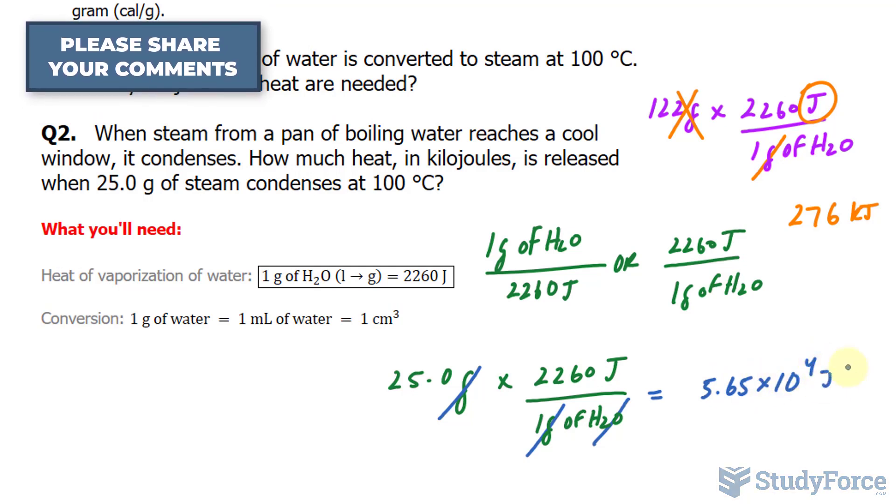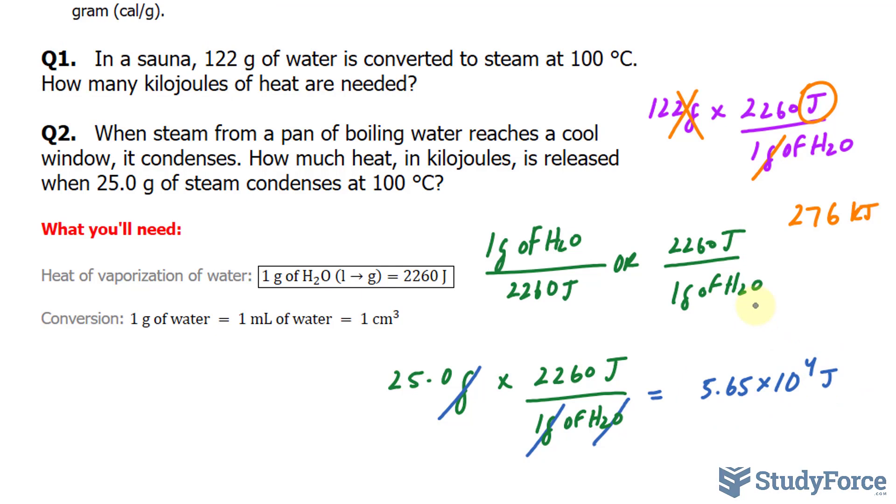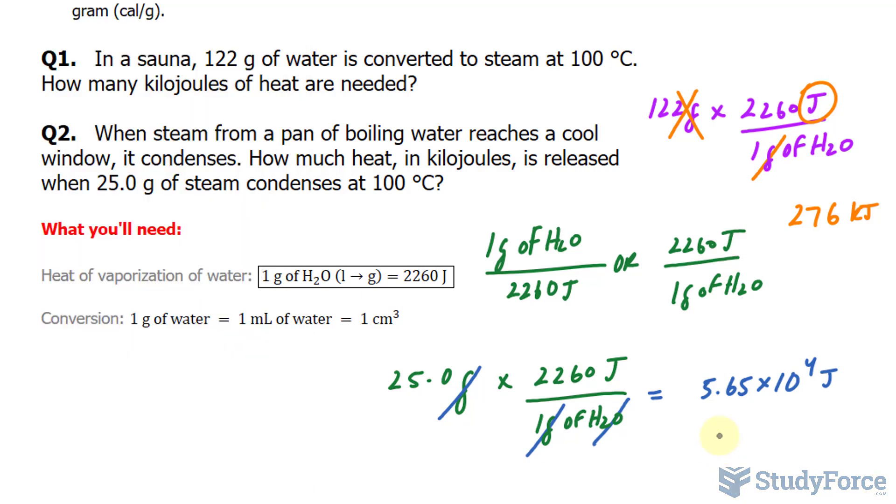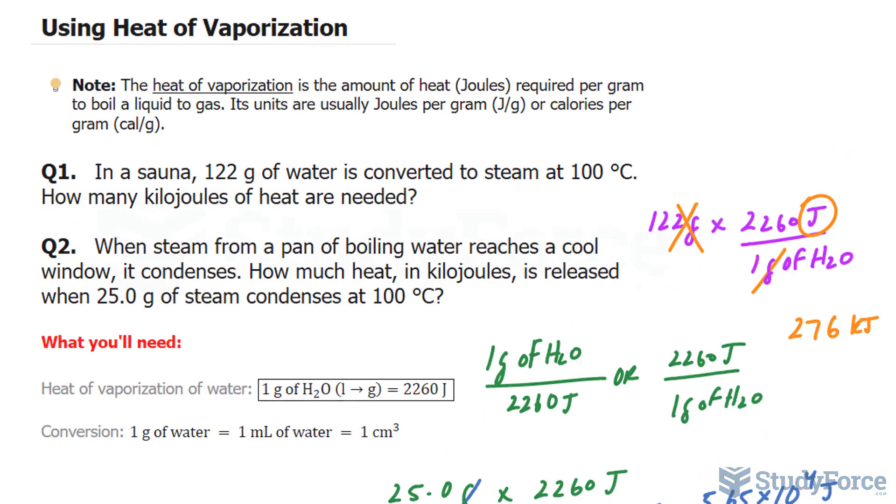They want it in kilojoules. This is in joules. So I'll divide this by 1,000. Let's do that. Divide by 1,000, and we get 56.5 kilojoules. And there you have it. Two examples related to heat of vaporization.